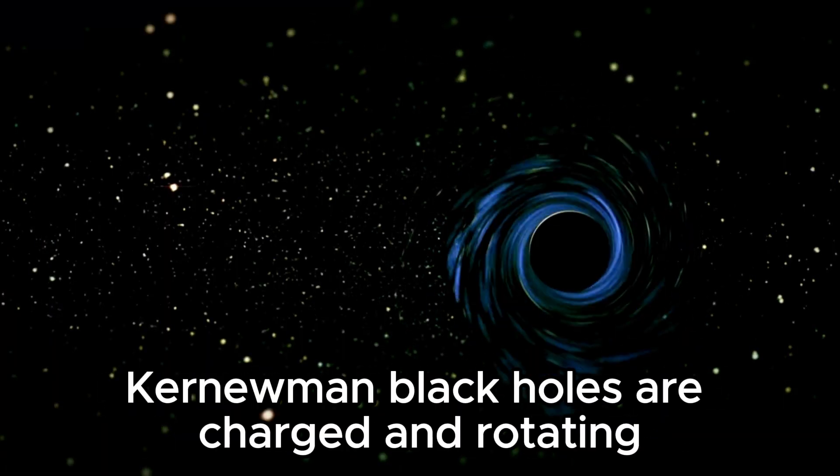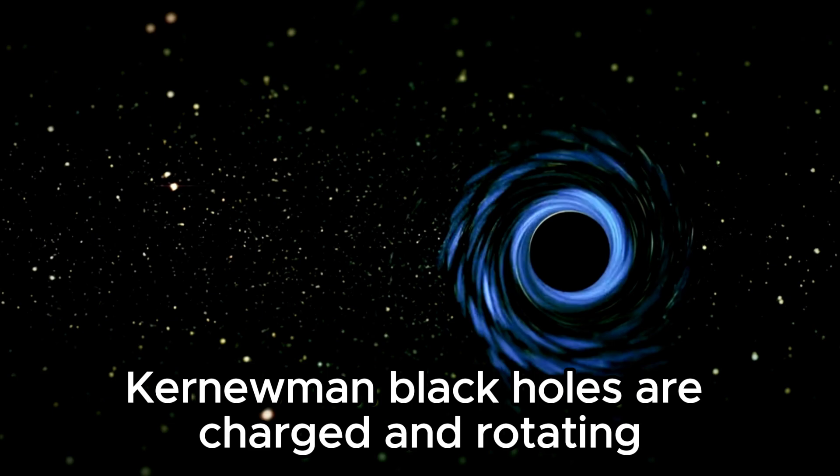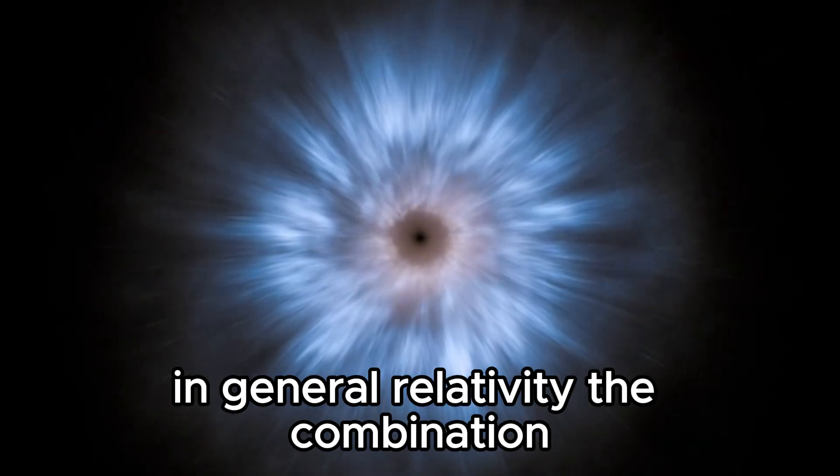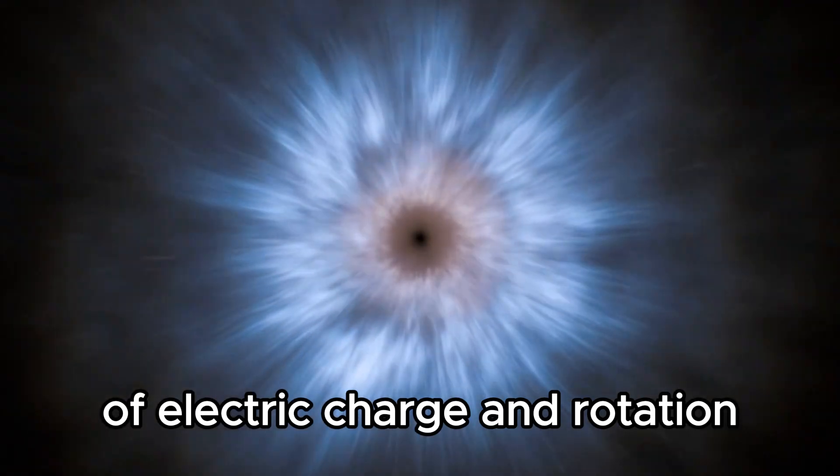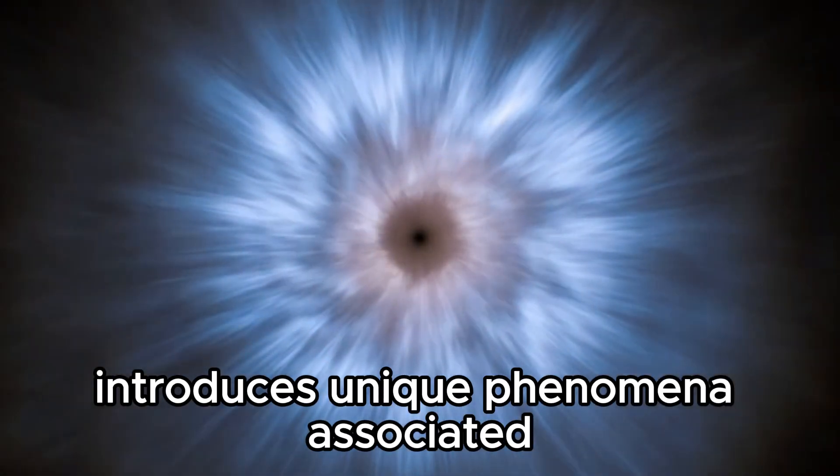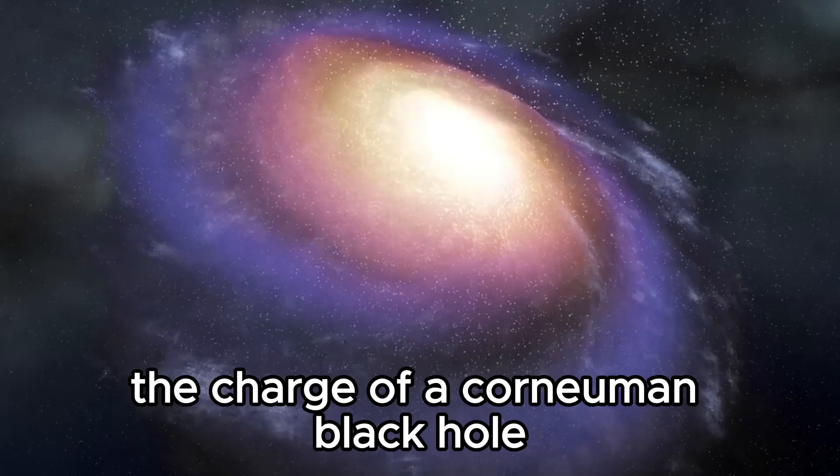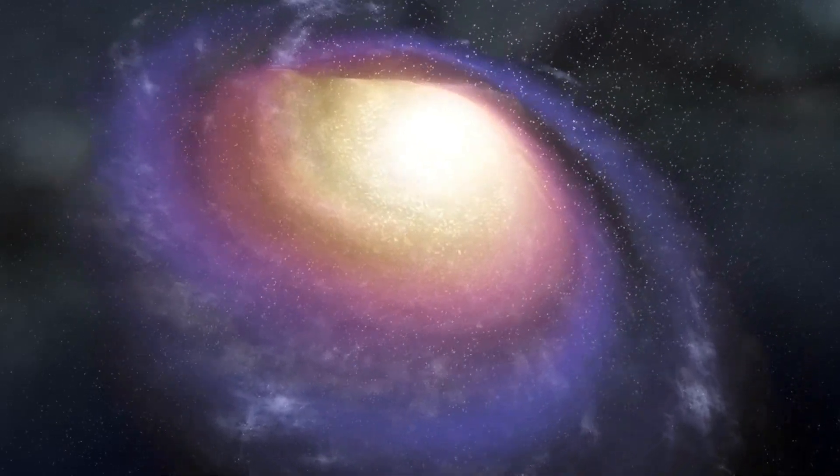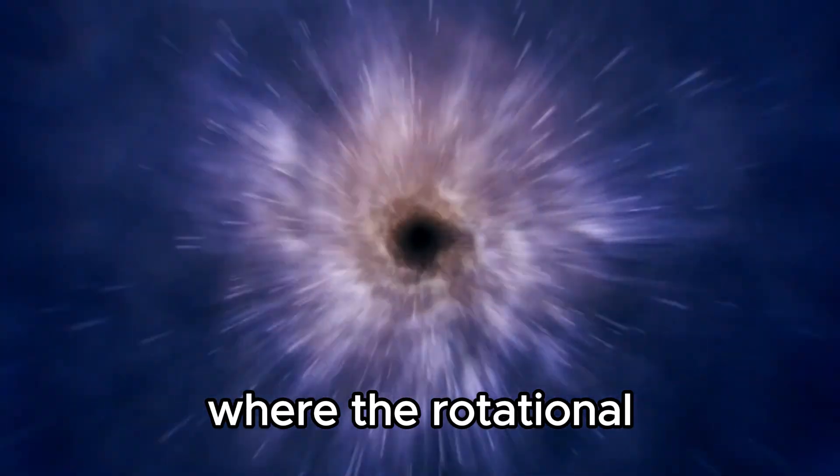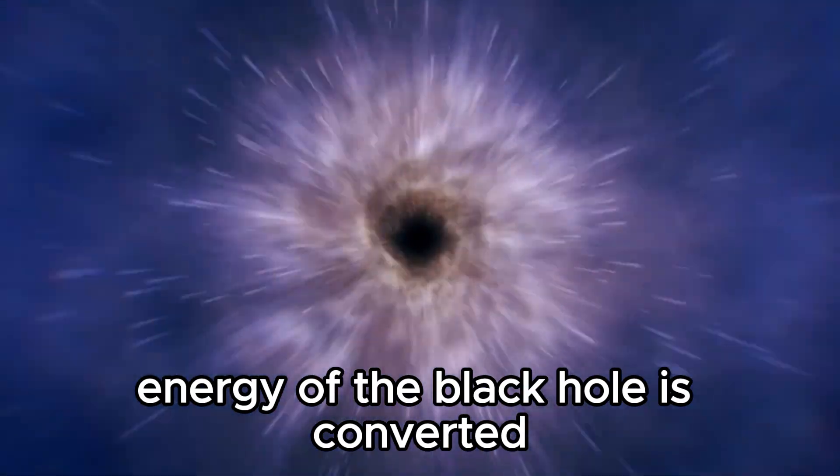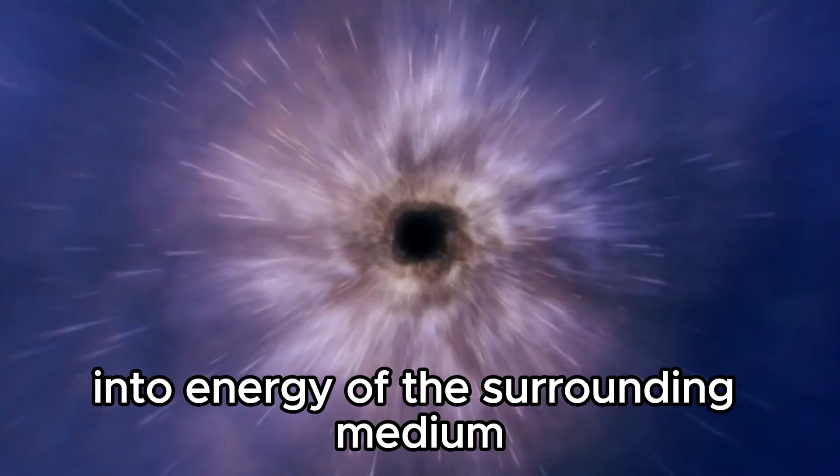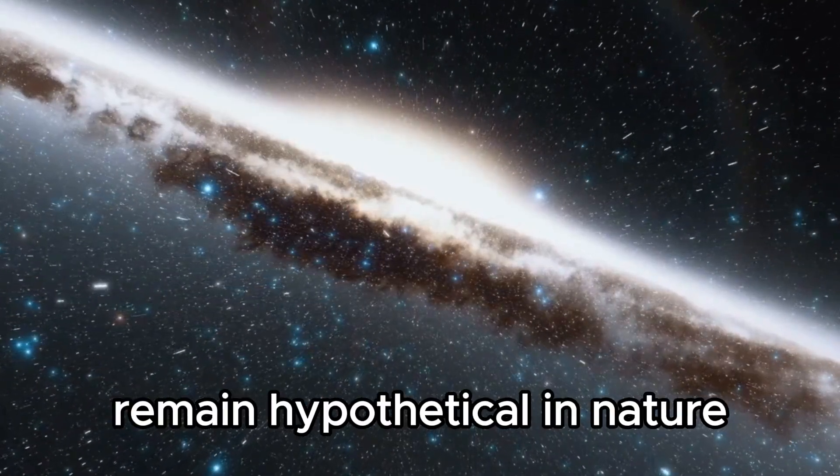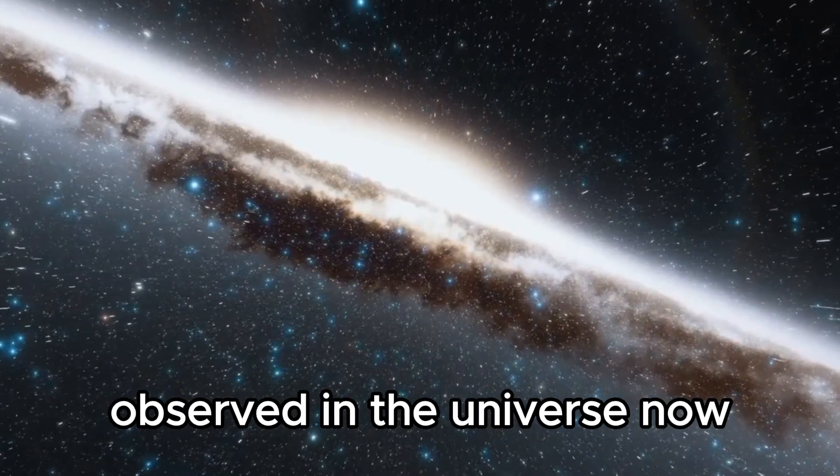On the other hand, Kerr-Newman black holes are charged and rotating. They are described by the Kerr-Newman solution in general relativity. The combination of electric charge and rotation introduces unique phenomena associated with these black holes. The charge of a Kerr-Newman black hole alters the properties of its event horizon and ergosphere, which is a region of space-time near the black hole where the rotational energy of the black hole is converted into energy of the surrounding medium. Despite these differences, both types of charged black holes remain hypothetical in nature and have yet to be definitively observed in the universe.